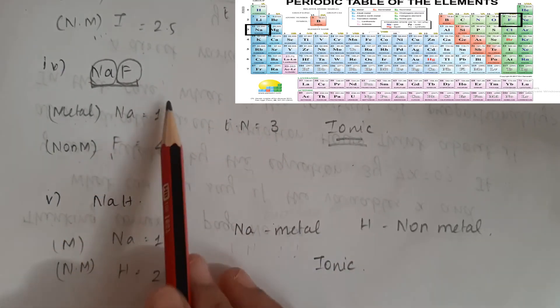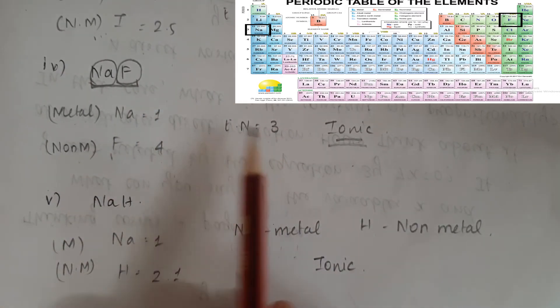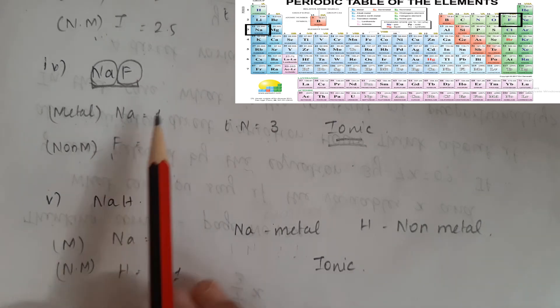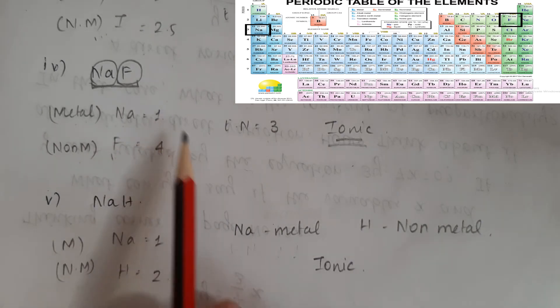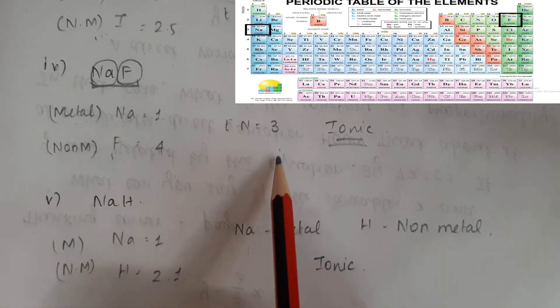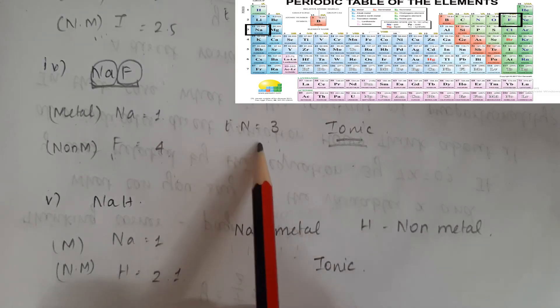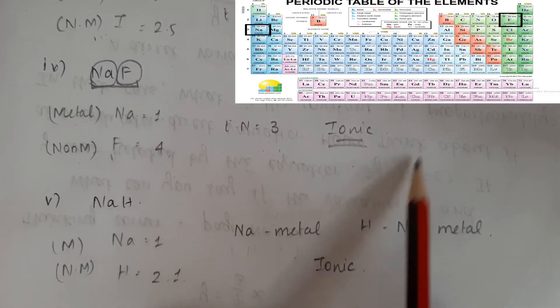If you compare the electronegativity values: sodium is 1, fluorine is 4. The difference is 3, which is greater than 1.7. Therefore, this is an ionic bond.